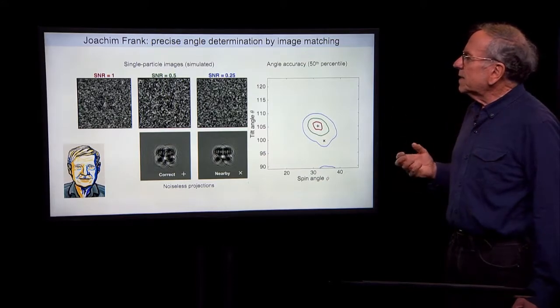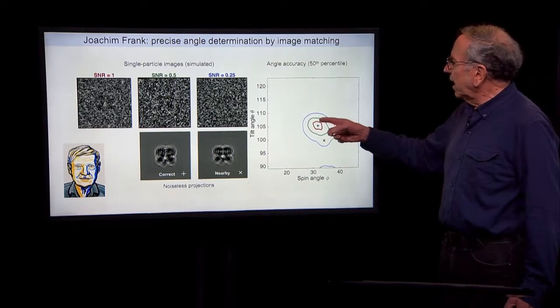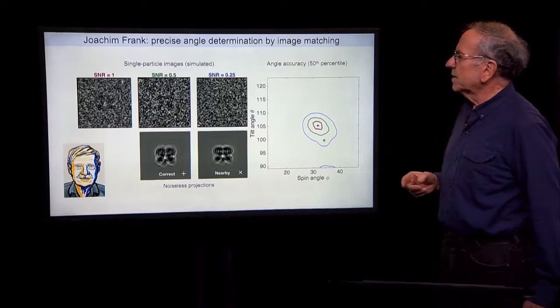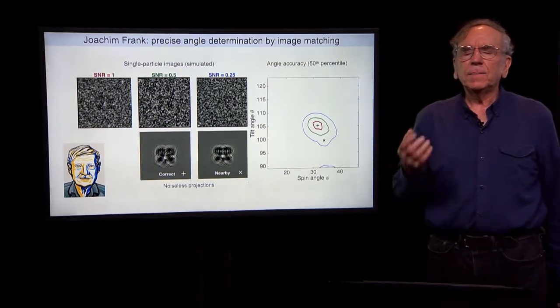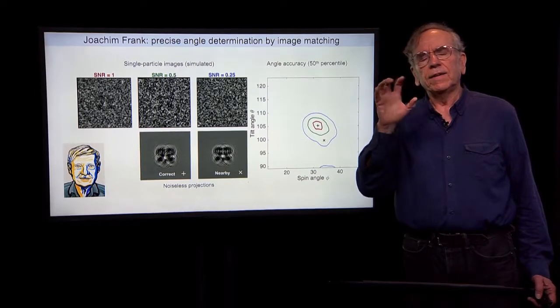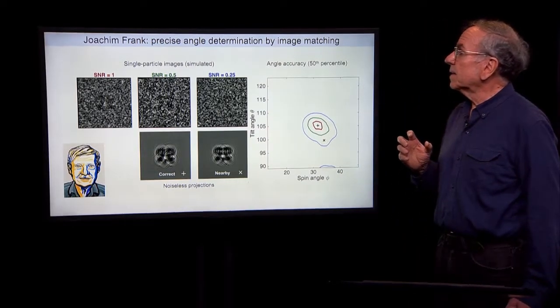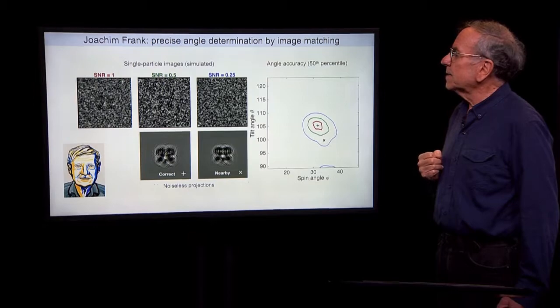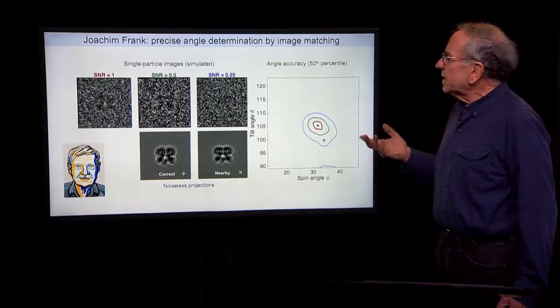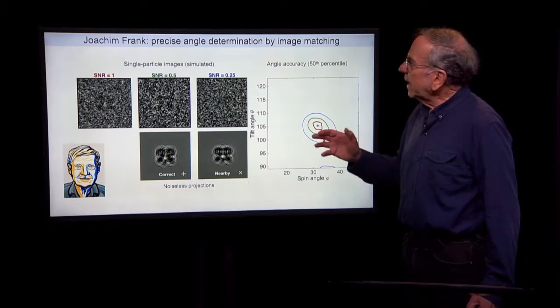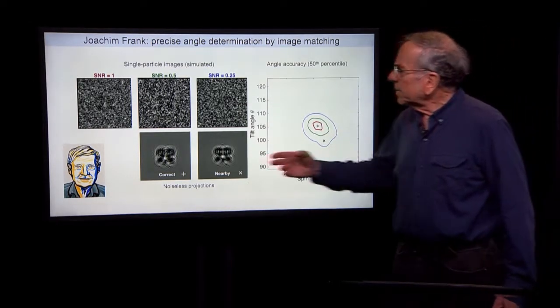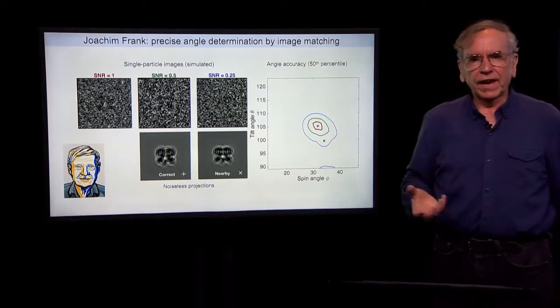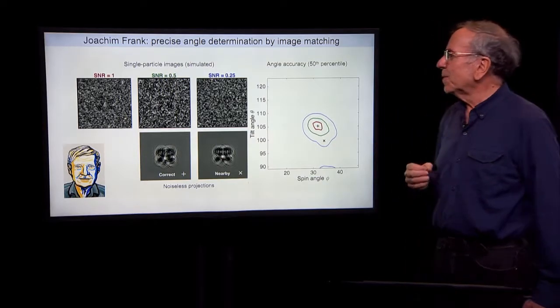So even though this image looks so hopelessly blurry and noisy, it is possible there is just enough information in that image to be able to determine the orientation angles quite precisely given a good reference model. So we can quantitate this by asking,